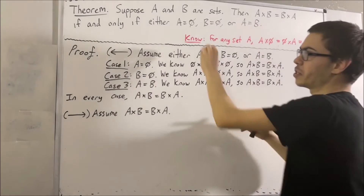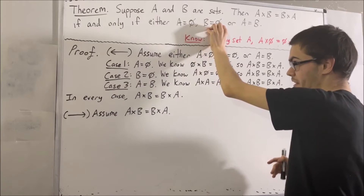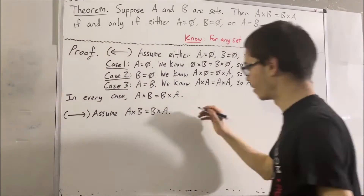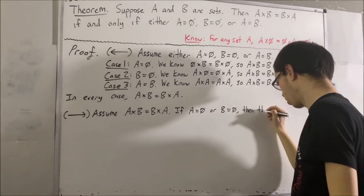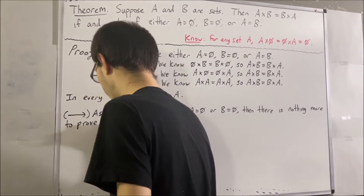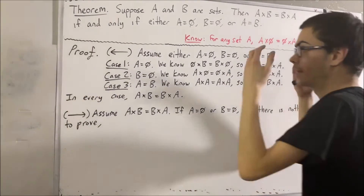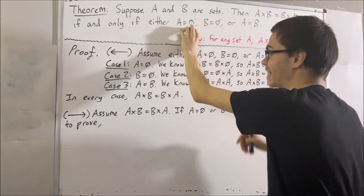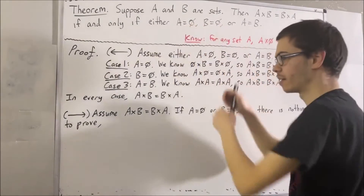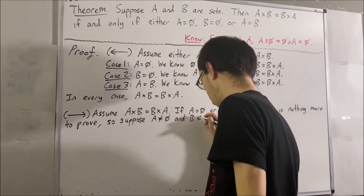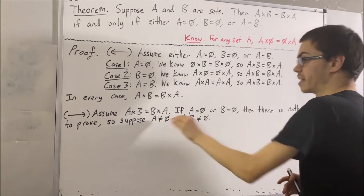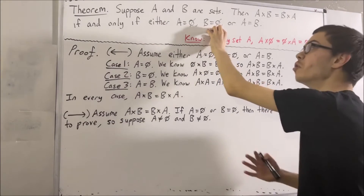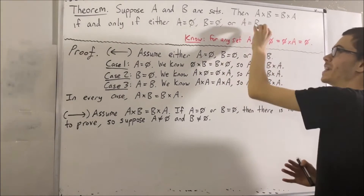Now, if we have the case that either A is the empty set or B is the empty set, then this entire statement is true, and there would be nothing more to prove. The only other possibility is if A is not the empty set and B is not the empty set. In that case, those two things are both false, so to prove this statement, we must prove that A is equal to B. So, that is our goal at this point.